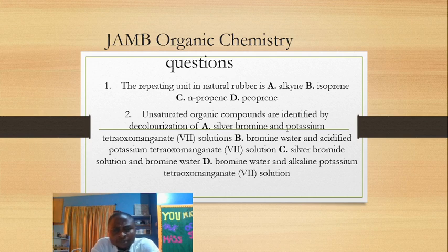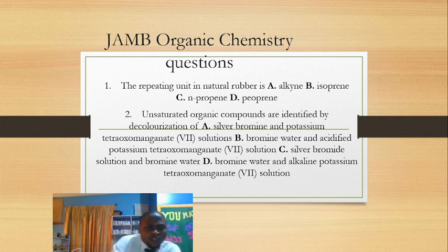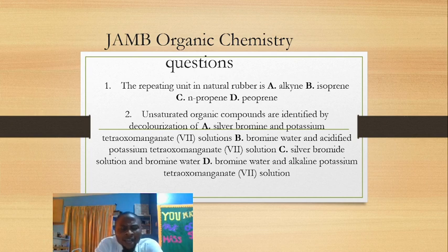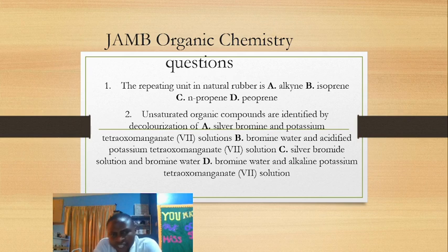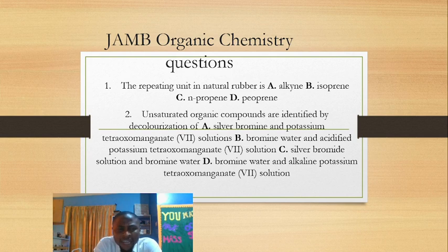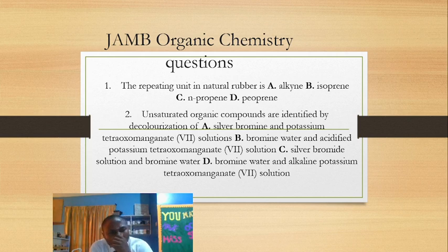The second question: unsaturated organic compounds are identified by decolorization. Unsaturated organic compounds are organic compounds that have multiple bonds — double bonds and triple bonds — such as alkynes, alkenals, and carbonyl compounds. Carbonyl compounds are compounds that have C double bond O. Organic compounds that have at least one multiple bond are termed unsaturated organic compounds.